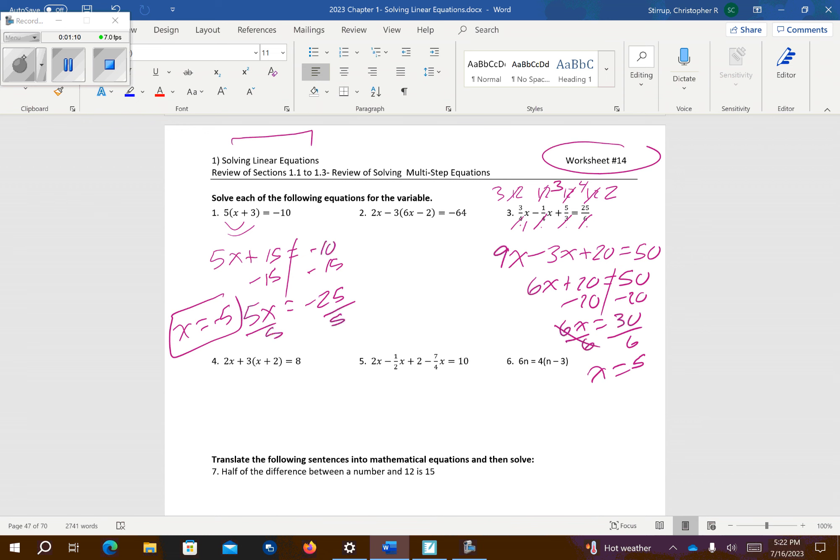Number 5. Looks like we have two denominators. We have a 2 and a 4. So 4 is the number that they both go into, the smallest number that they both do. So I multiply everything by 4. So that's going to give me 8x. Half of 4 is 2, so I get minus 2x plus 8 because 4 times 2 is 8. And then 4s cancel, minus 7x equals 40.